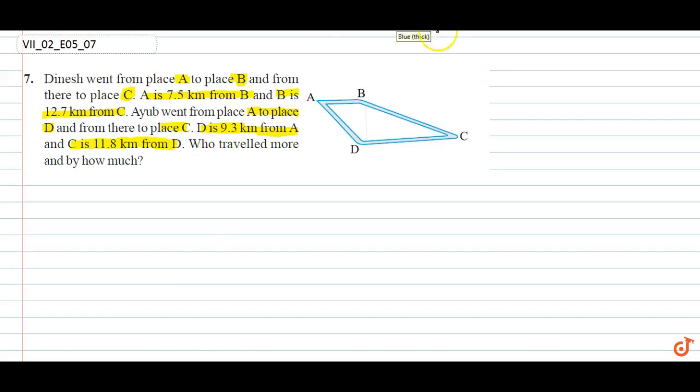Who traveled more and by how much? A to B is 7.5 km and B to C is 12.7 km. A to D is 9.3 km and D to C is 11.8 km. So Dinesh ne kitna chala?